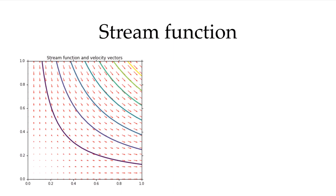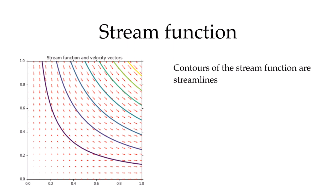Here I've plotted the velocity vectors alongside contours of the stream function. Notice that these contours are everywhere tangent to the velocity vector — contours of the stream function are streamlines, which shouldn't be surprising. In this flow it was very reasonable to choose a constant of zero, since all velocity vectors are parallel to the axes and there's no flow through those surfaces. The value of the stream function at a contour equals the volume flow rate integrated from the reference point where psi equals zero to that point.